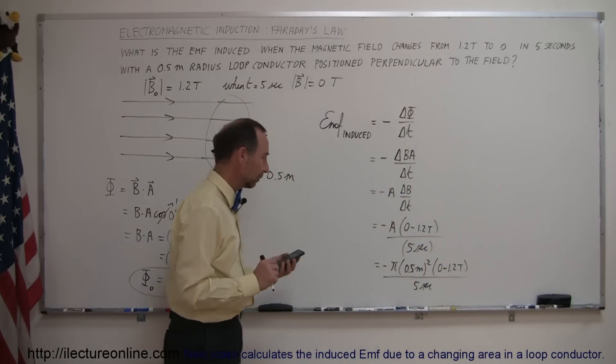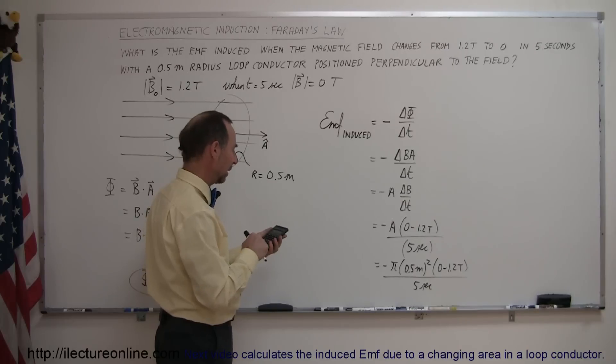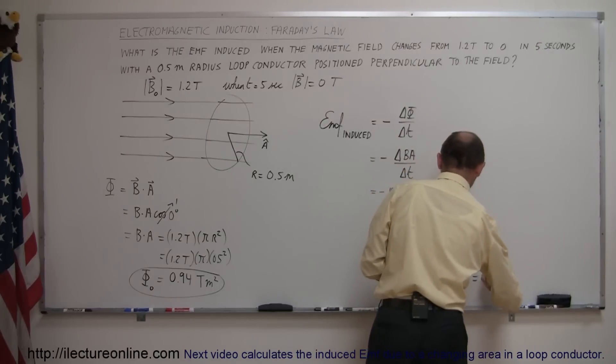So, what is it equal to? Well, we have 0.5, we square that, we multiply that times pi, now we multiply that times minus 1.2, and we divide that by 5. And it turns out this is equal to 0.19,